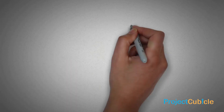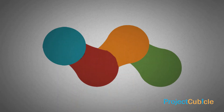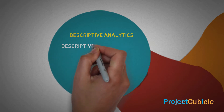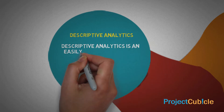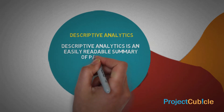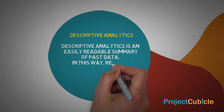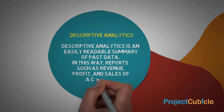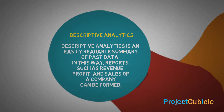There are 4 types of Big Data Analytics. Descriptive Analytics is an easily readable summary of past data. In this way, reports such as revenue, profit, and sales of a company can be formed.